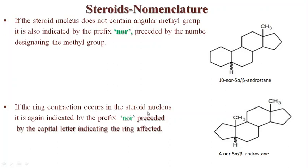If ring contraction occurs in the steroid nucleus, it is again indicated by the prefix 'nor' preceded by the capital letter indicating the ring affected. Here the A ring has contracted to become five-membered, so we use the prefix 'nor' with 'A', giving A-nor-5α/β-androstane.